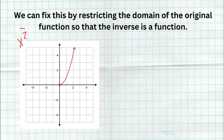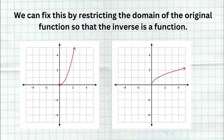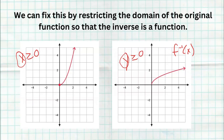Let's go back to x². If we restrict its domain to x ≥ 0, we get rid of the left side — we only allow this function to be defined when x is greater than or equal to zero. Now when we find the inverse by switching x's and y's (reflecting across the line y = x), we get an actual function. And since I restricted the domain of the original to x ≥ 0, the range of the inverse is restricted to y ≥ 0 as well, because when you switch x's and y's that domain restriction becomes the range restriction.